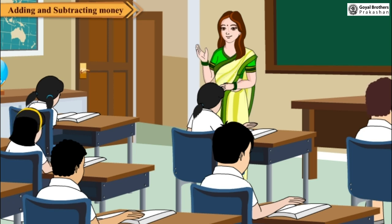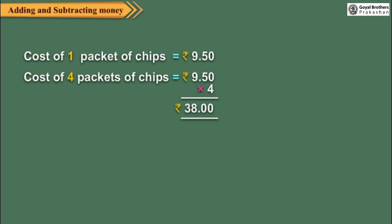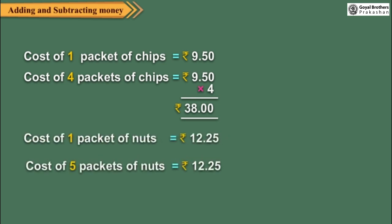Let us do a problem for this. Find the total cost of 4 packets of chips at rupees 9.50 per packet and 5 packets of nuts at rupees 12.25 per packet.